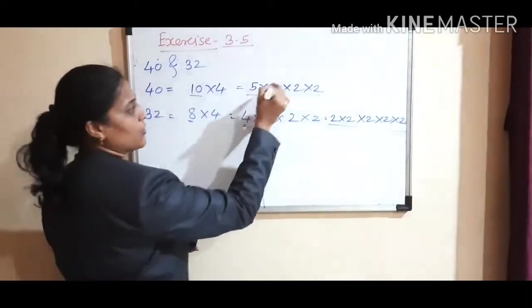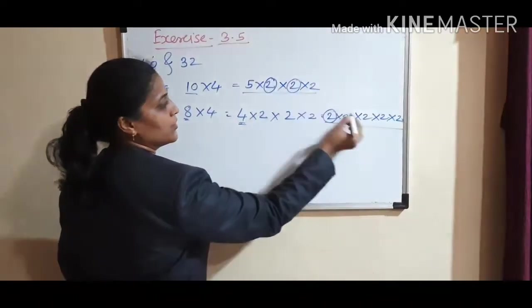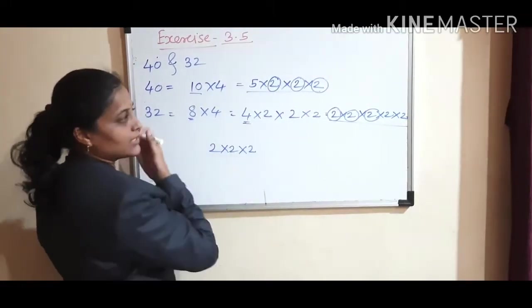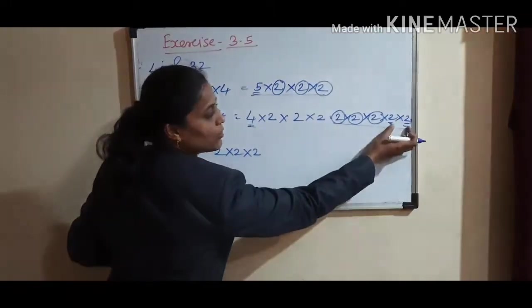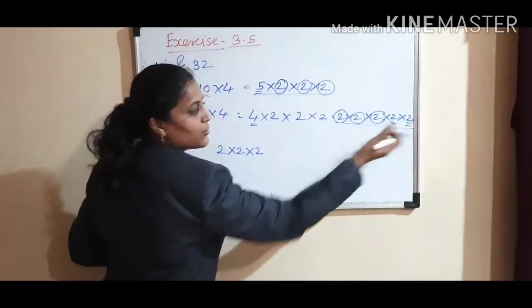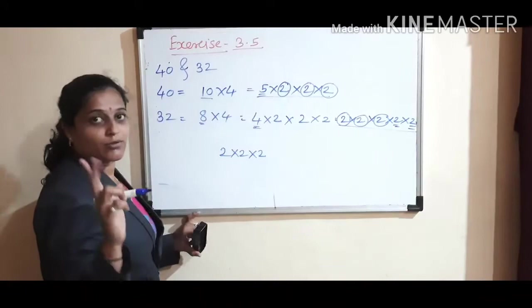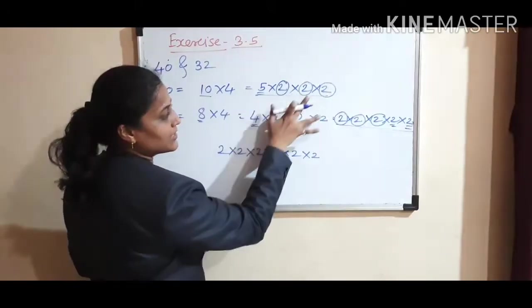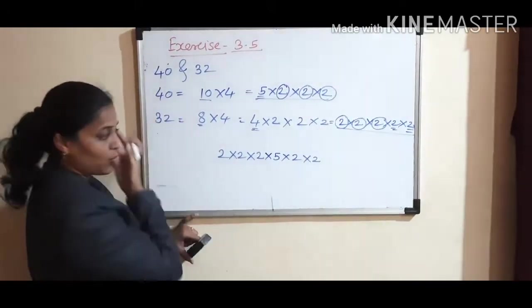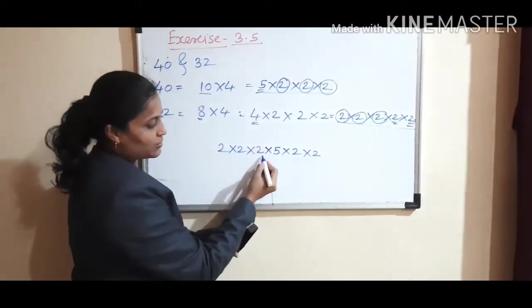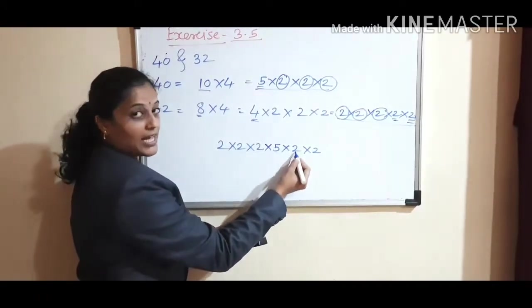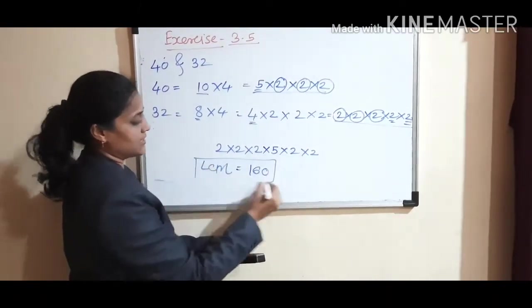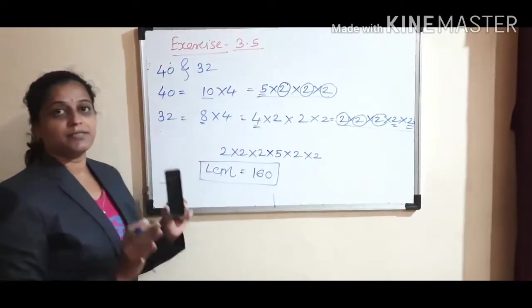Now, common factors. We first circle the common: three 2s. We write those three 2s, and the remaining factors: 5 and two more 2s. These are not common between both numbers. Common should always be between both numbers. 2 times 2 is 4, 4 times 2 is 8, 8 times 5 is 40, 40 times 2 is 80, and 80 times 2 is 160. This is our LCM: 160. Note down the examples properly.